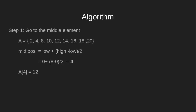Now let's look at our algorithm step by step through an example. Step one says to go to the middle element. In divide and conquer, we divide our array into two halves so computations decrease to half. Our array contains nine elements, so the middle element is at index 4, which is the value 12. This is our middle element. We will now see whether our missing number lies in the left half or the right half.